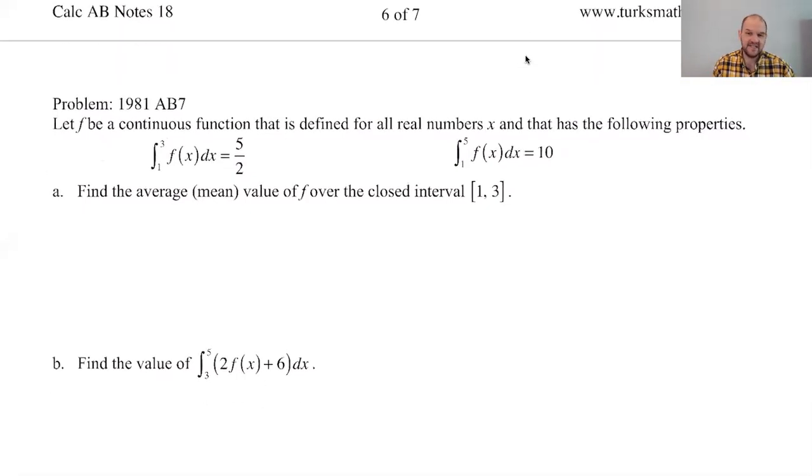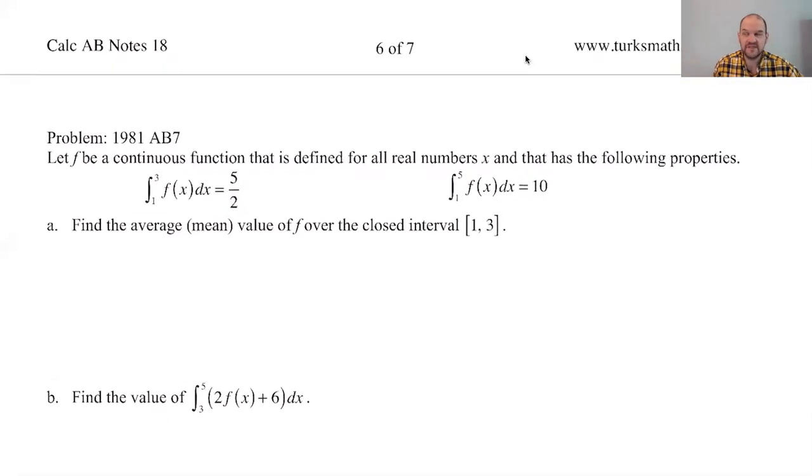So this time, we're going to do 1981 AB 7. There used to be seven free response questions on the AP exam. They finally settled down to six. On the modern exam, if it's a normal year, there should be two calculator problems and four non-calculator problems. It's getting harder to guess what's going to be on which part. Average value can show up anywhere. So let's see this problem.